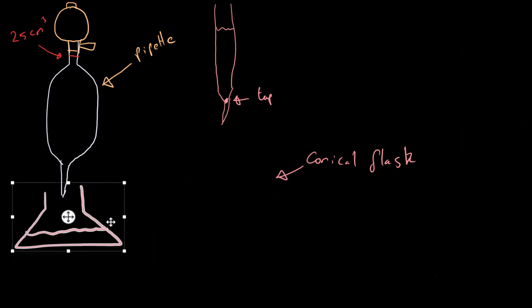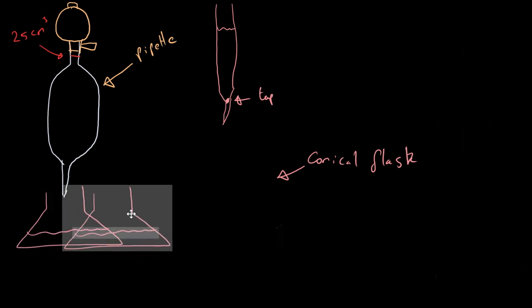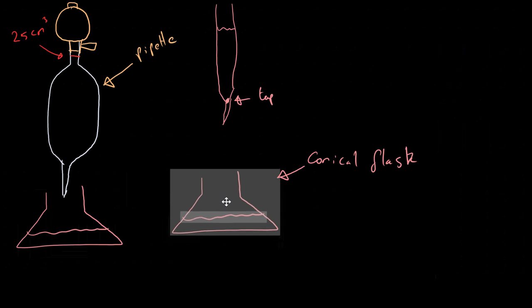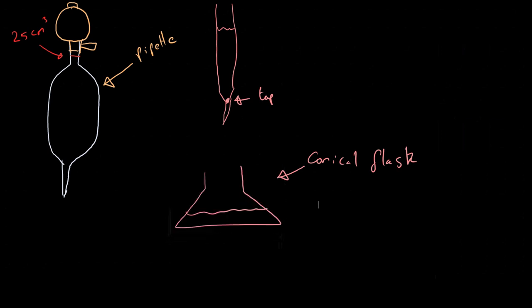We fill the pipette with 25 cm³ and pour that into our conical flask. We then place the conical flask under the burette and fill the burette with whatever solution we are pouring in. The burette has markings all the way up — normally to 0.1 cm³, so you can read to the nearest 0.05 cm³.